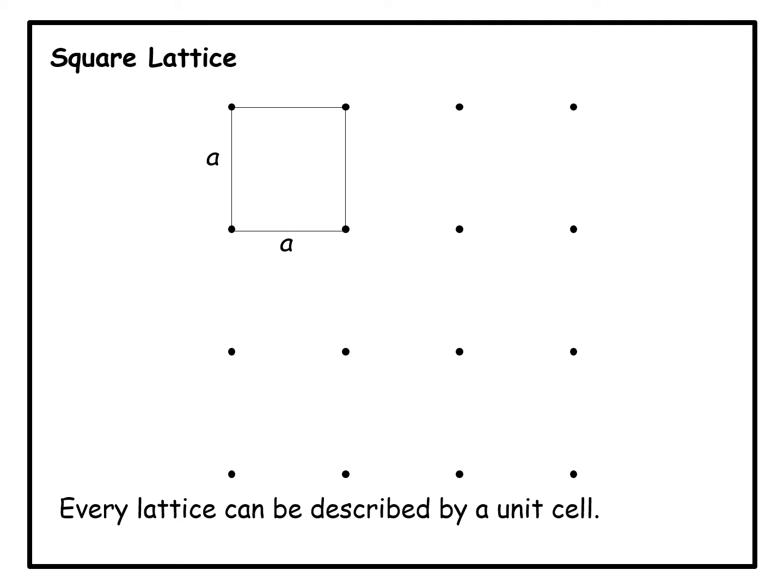This is what will be called a unit cell of this two-dimensional lattice. Every lattice can be described by a unit cell. In two dimensions, the unit cell will be, in general, a parallelogram, though here it is a square.